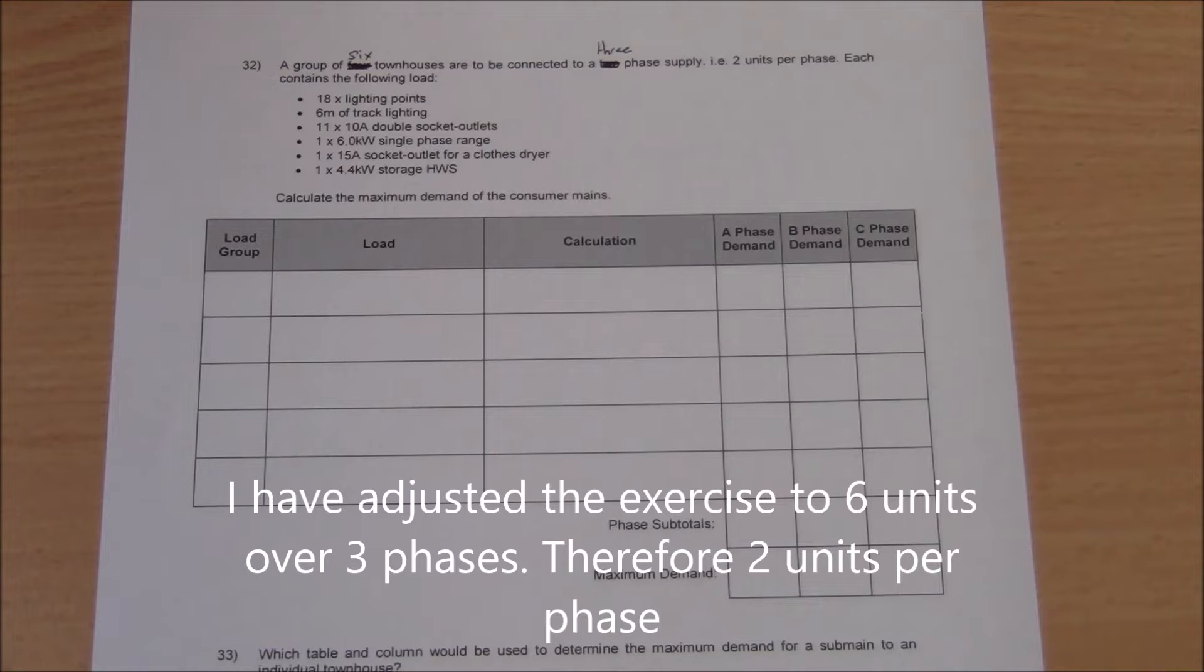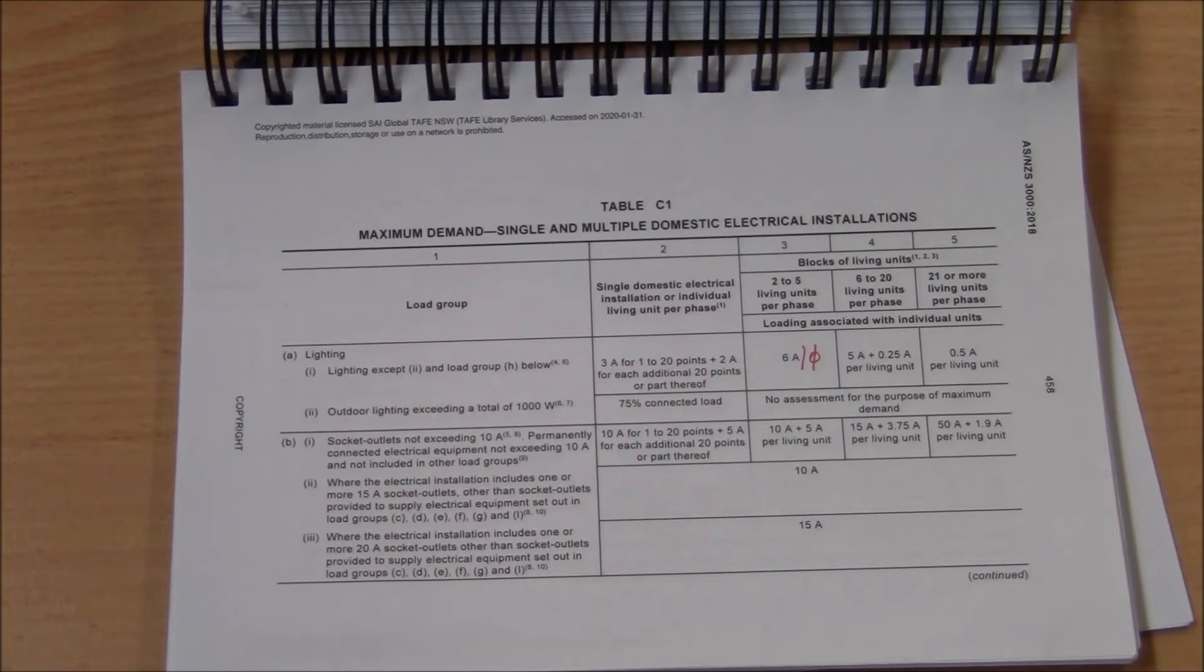Page 83 of your workbook has a maximum demand exercise. To complete this exercise revolves around a multiple domestic installation. This installation is for two units per phase. Let's consult table C1. As it's a domestic installation, columns 3, 4, and 5 relate specifically to blocks of living units. This exercise is for an installation with two units per phase, so we will concentrate on column 3.